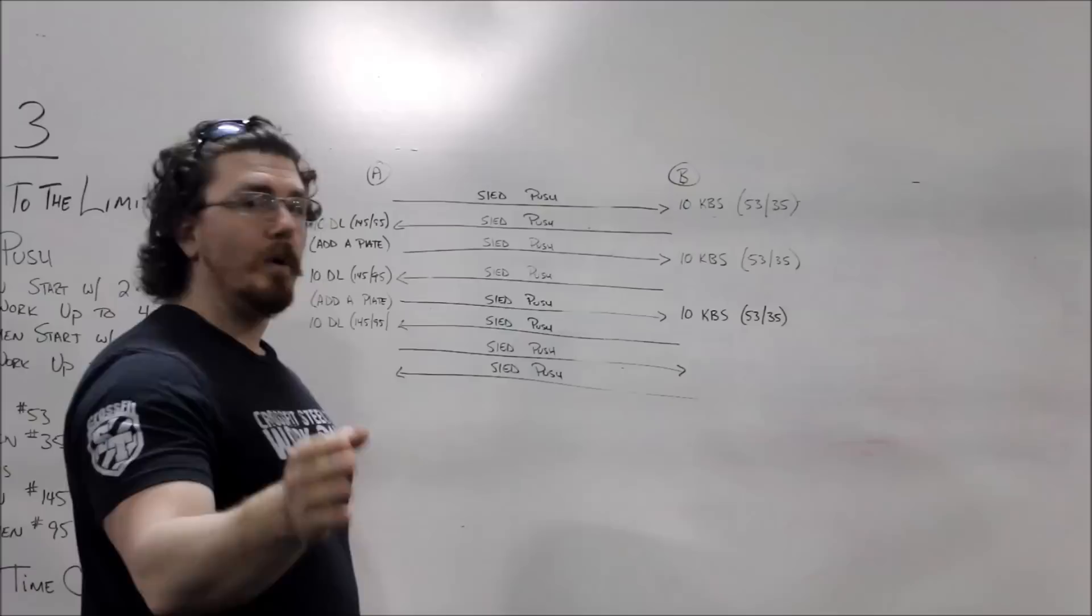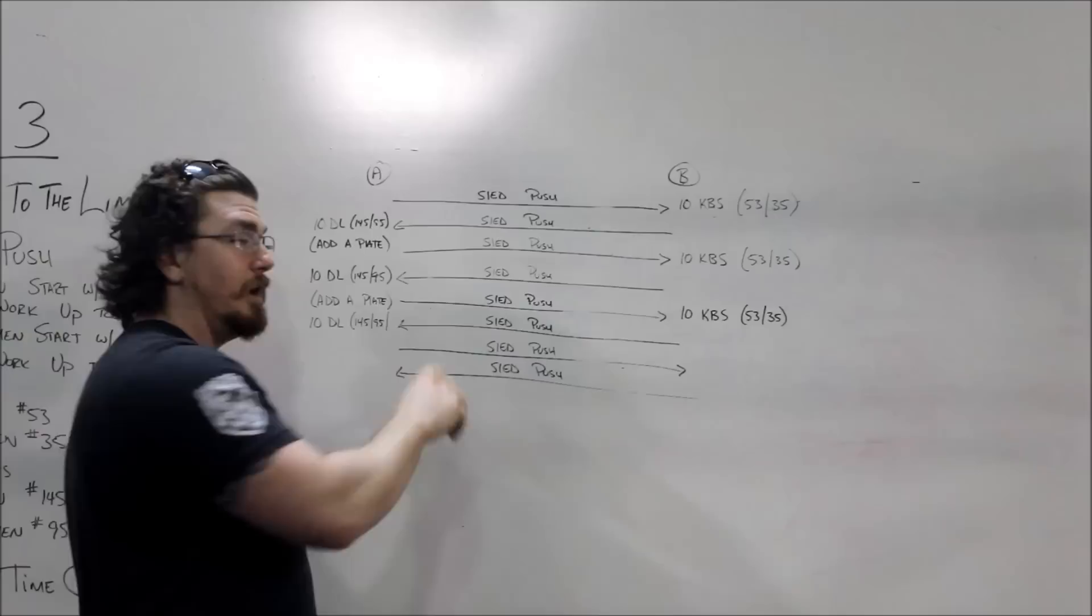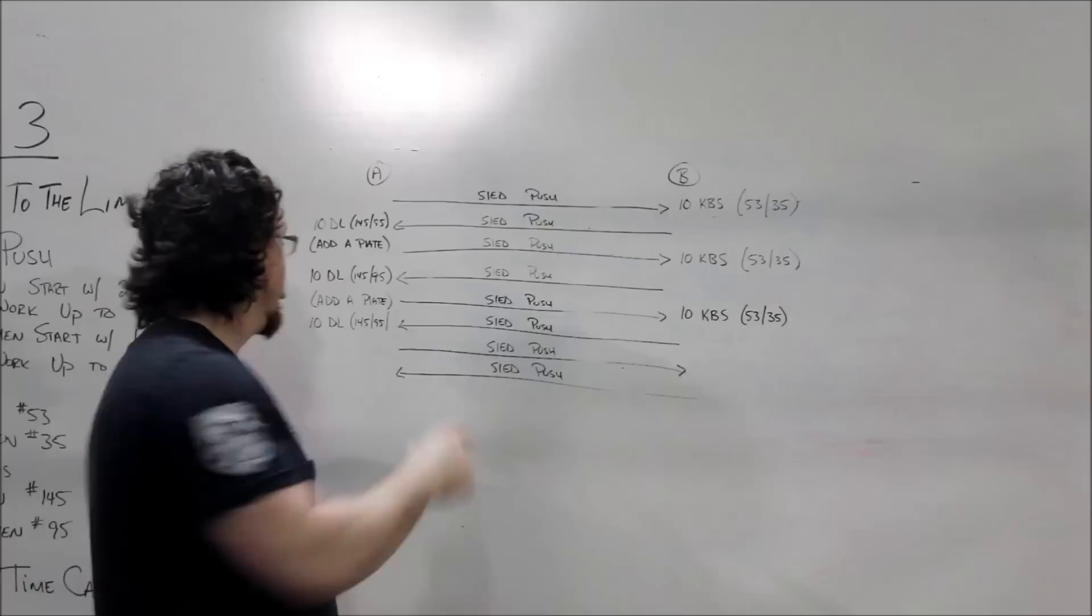Once they're complete, you jump back on the sled, push the sled back. Once you cross the line down here, you again have to do ten deadlifts, and then you have to add a plate.